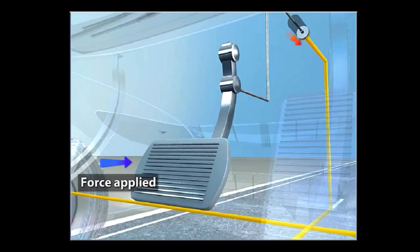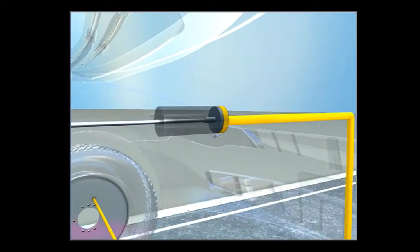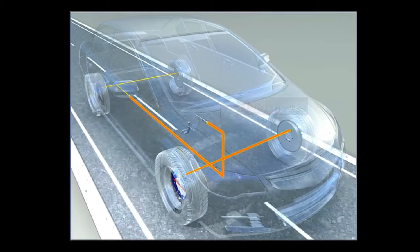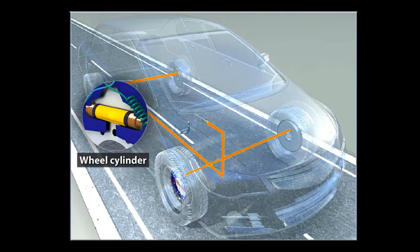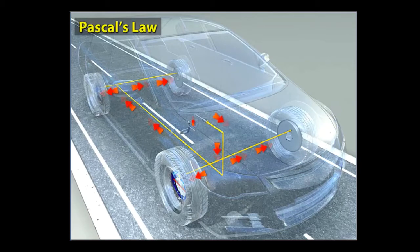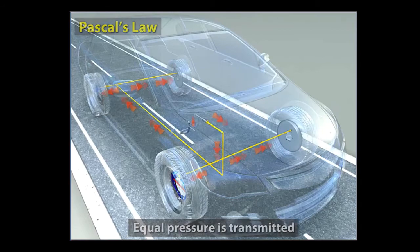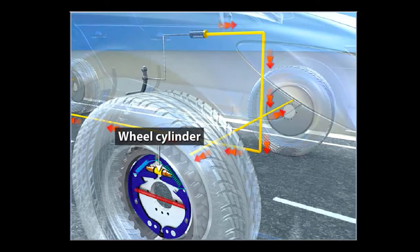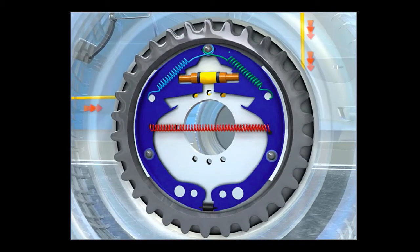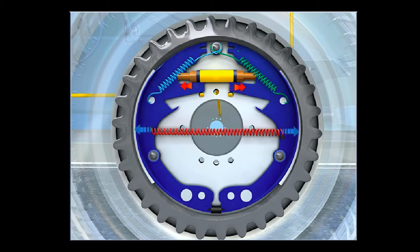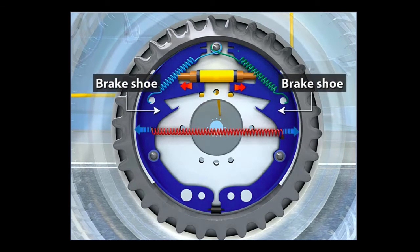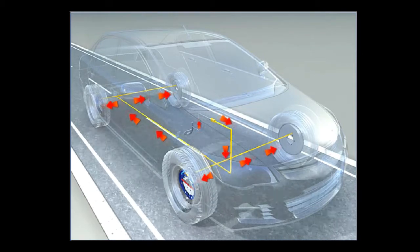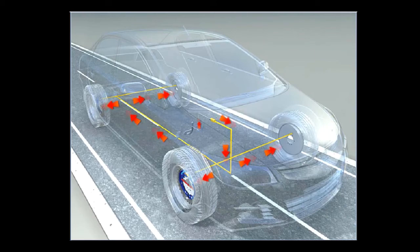When the brake pedal is depressed, a pressure is exerted on the fluid in the master cylinder. This makes the fluid move from the master cylinder to the wheel cylinder. The pressure, according to Pascal's law, is transmitted equally through the fluid from the master cylinder to the pistons of the wheel cylinder. This pressure pushes out the pistons of the wheel cylinder and presses the brake shoes against the rim of the wheel. Equal pressure is exerted on the other wheels of the car connected to the pipeline, in accordance with Pascal's law.